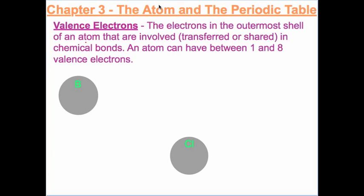Boron has five protons and six neutrons, which means the electron configuration is two, three — two electrons in the first shell, three in the second shell.